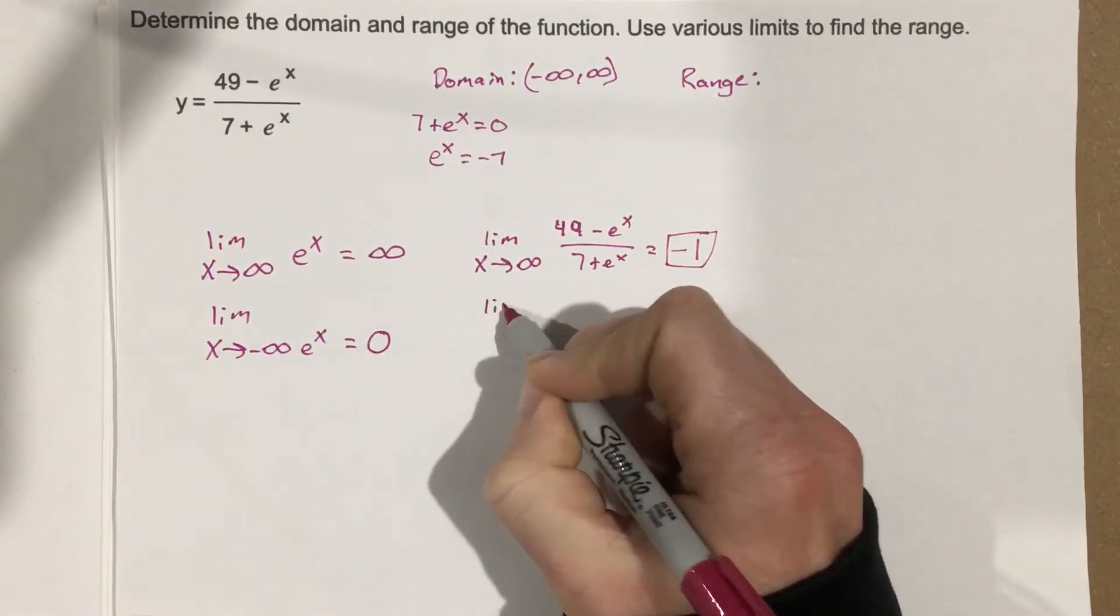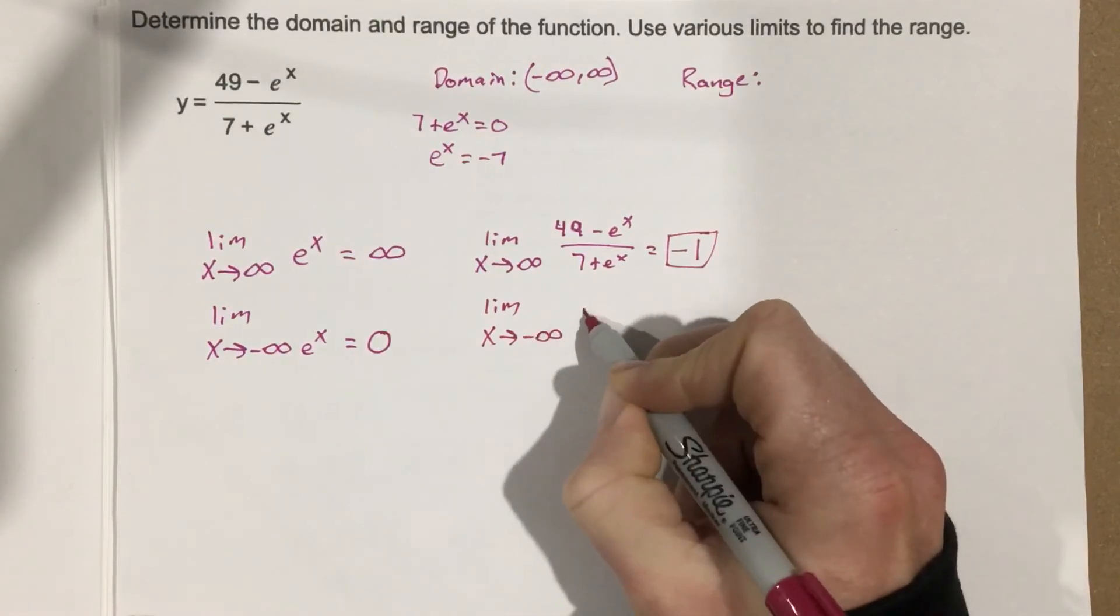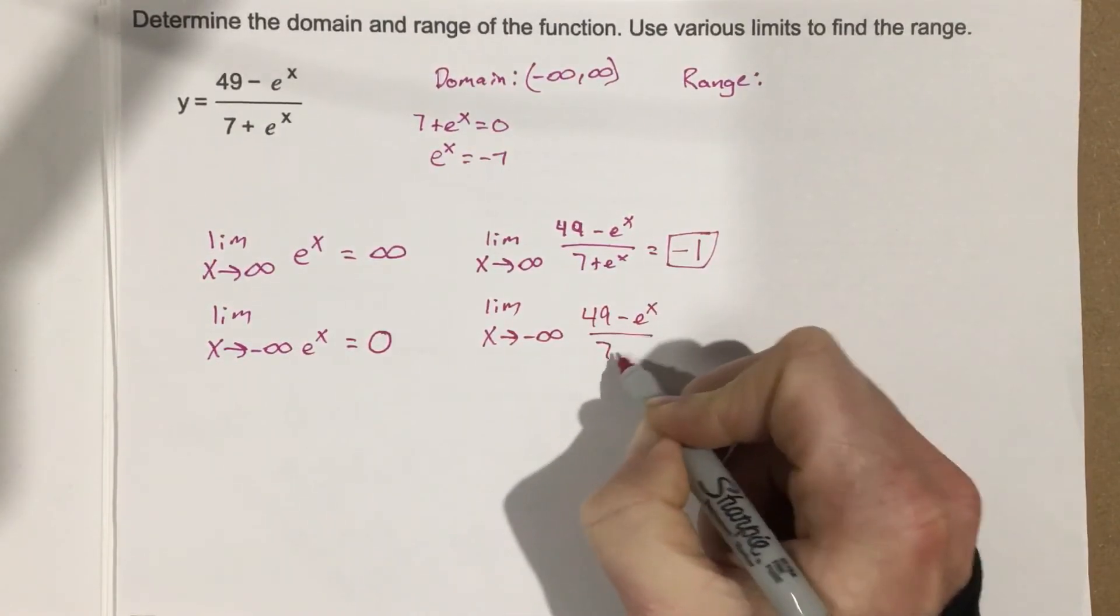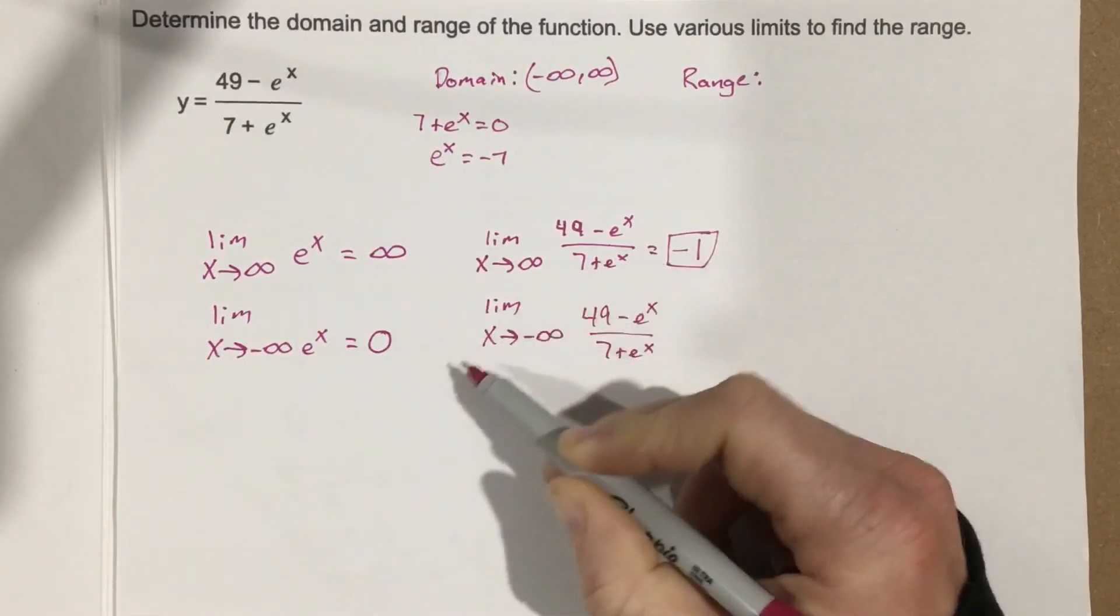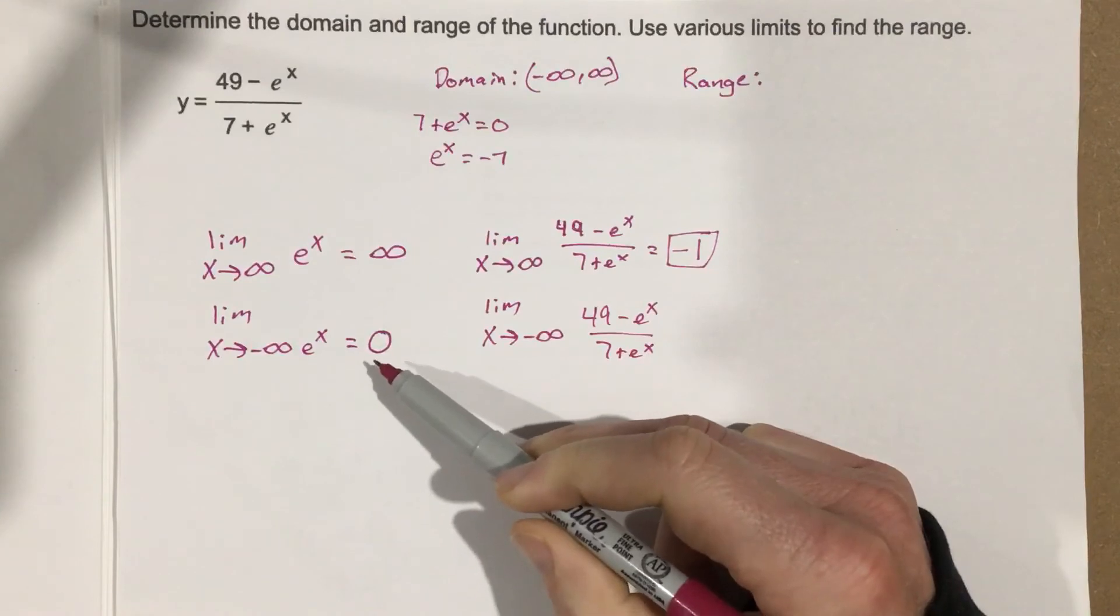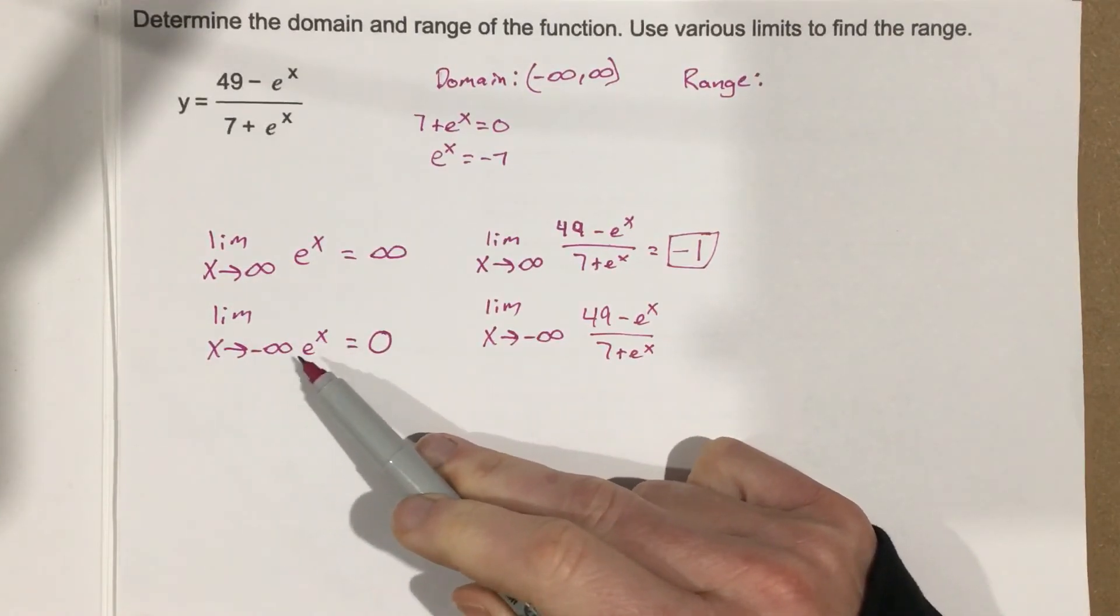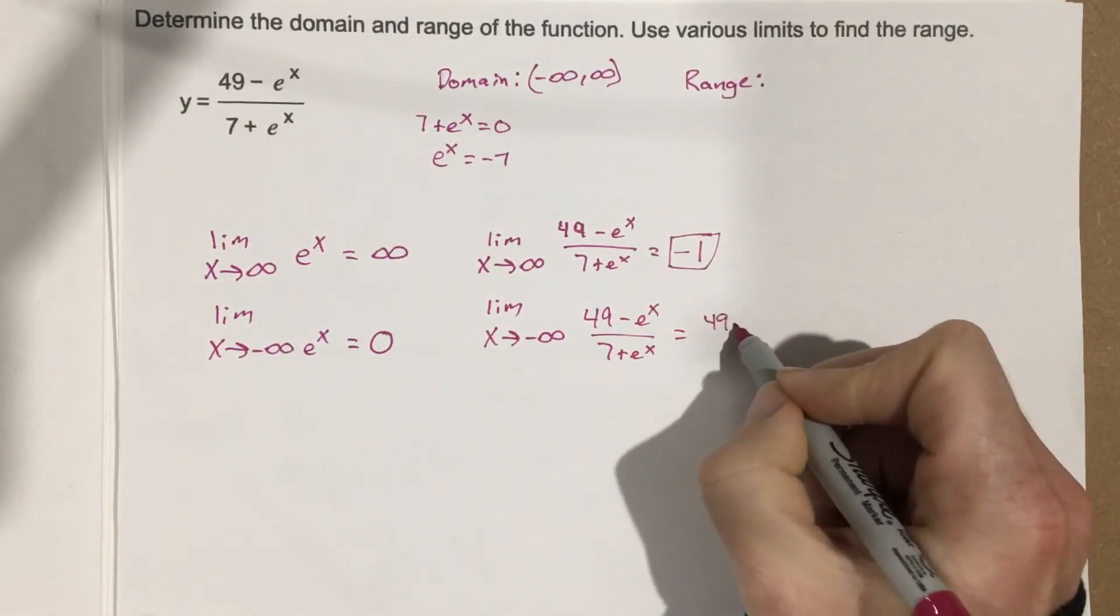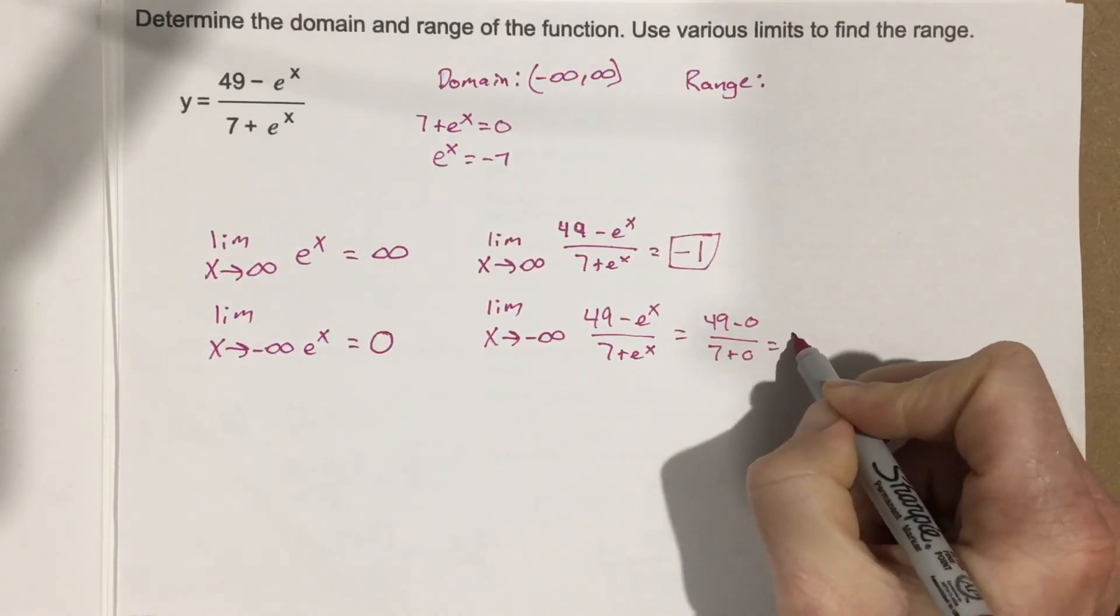And then if we do the limit as x approaches negative infinity, 49 minus e to the x over 7 plus e to the x. Well, now, we're going to get, essentially, any time we do the limit as x approaches negative infinity for e to the x, we get 0. So we end up with 49 minus 0 over 7 plus 0, which is 7.